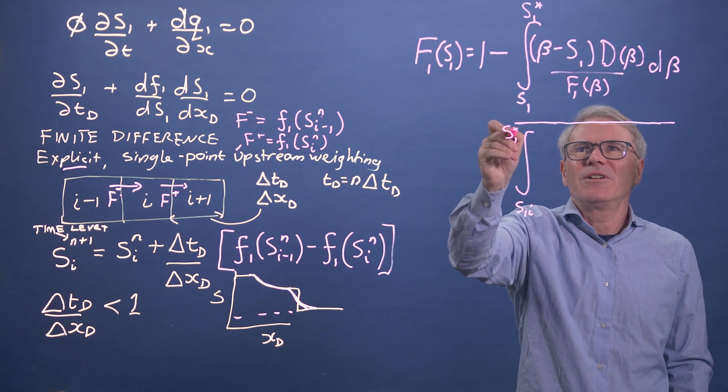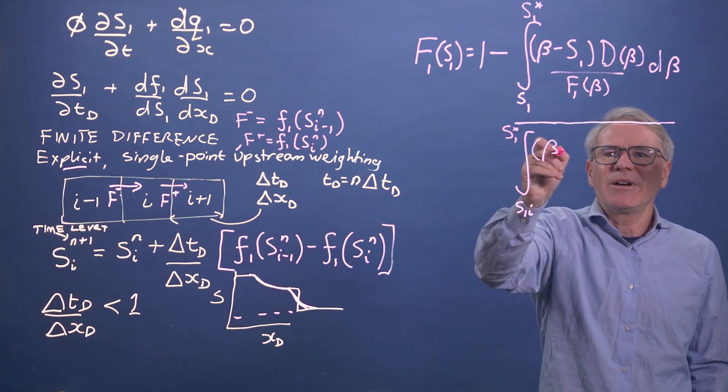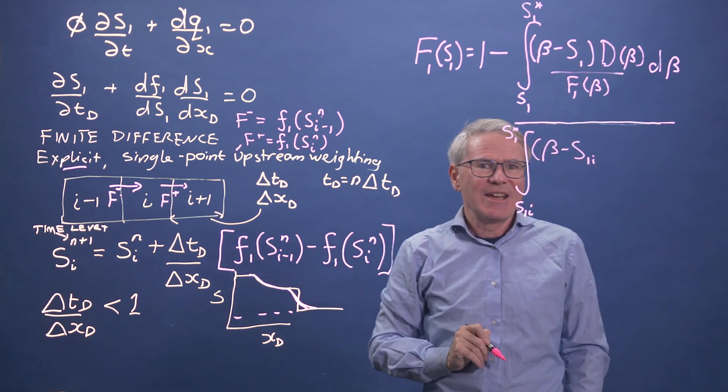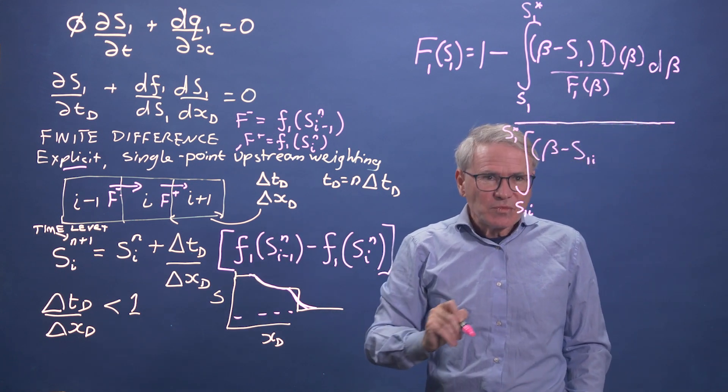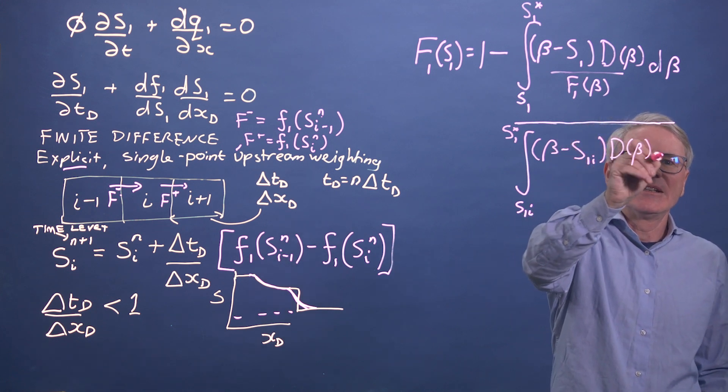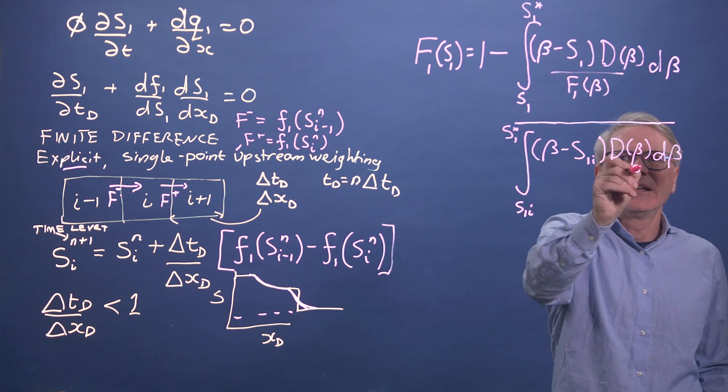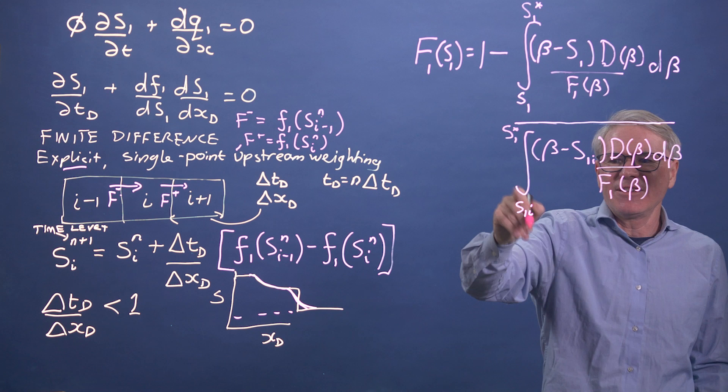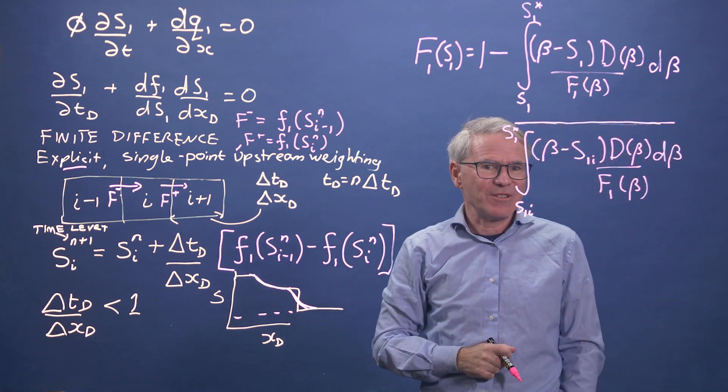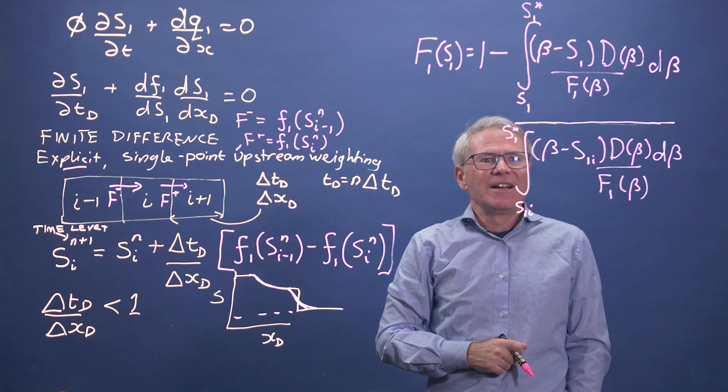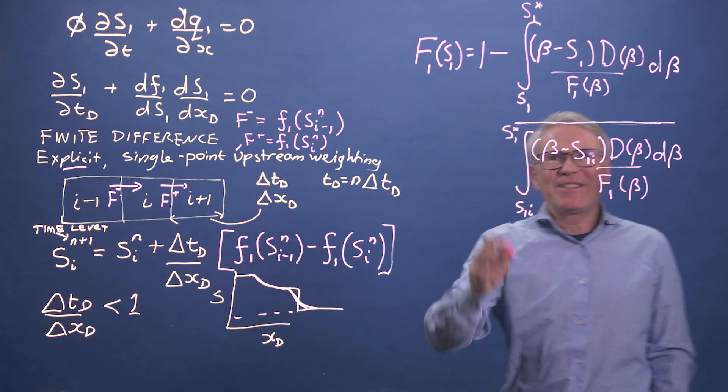but actually the constant we could also write as an integral. So we're going to do that. So the constant can be written as s1 to the initial conditions, s1 star. So this is beta minus s1 star, so this is beta minus s1i, because we're at the initial conditions